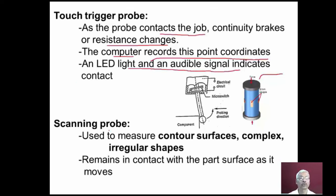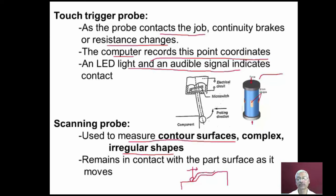In the case of a scanning probe, this is used to measure contour surfaces and very complex irregular shapes. This scanning type of probe remains in continuous contact with the part surface as it moves. When the probe moves along the surface, it scans over it and sends signals to the computer system, and hence very complex 3D shapes can be assessed using the scanning probe.